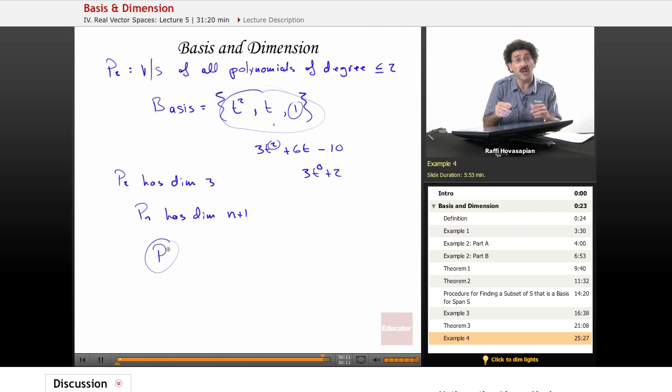P, the space of all polynomials, all polynomials, that's an infinite dimensional vector space. It requires, it has an infinite number of vectors in its basis, not like P2 or R3 that only has three.